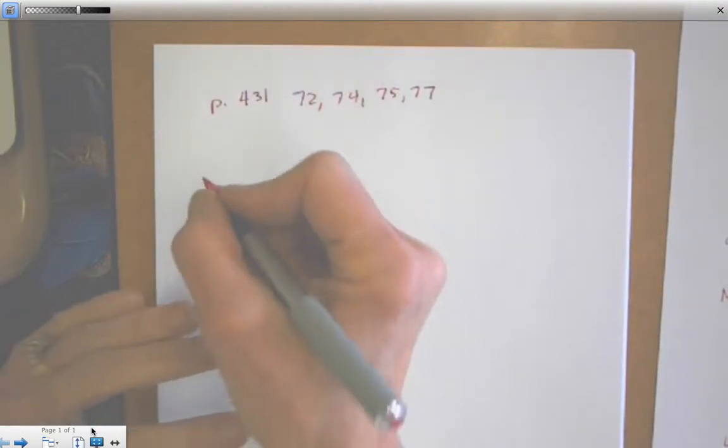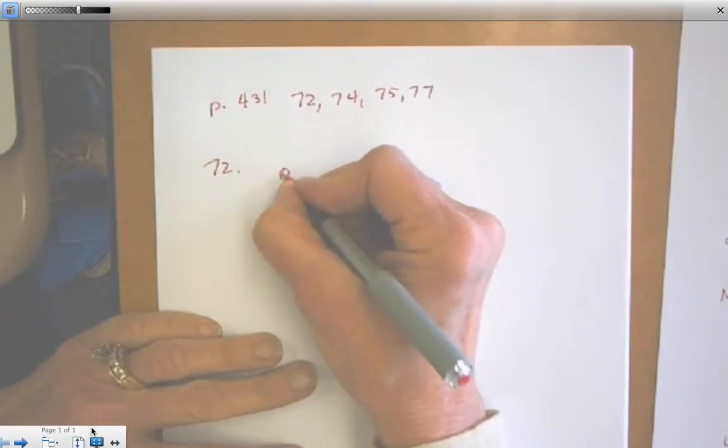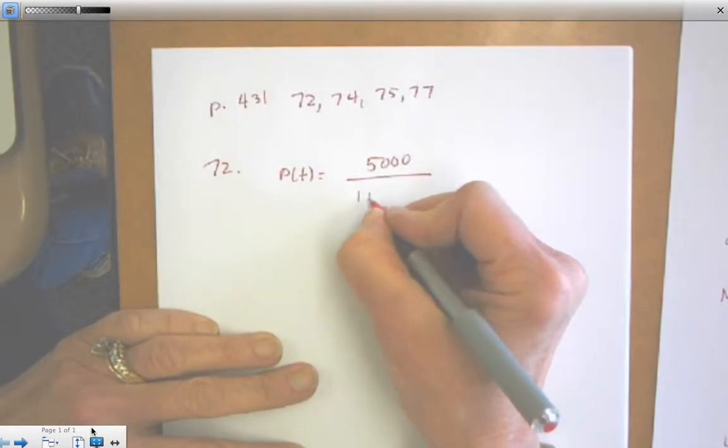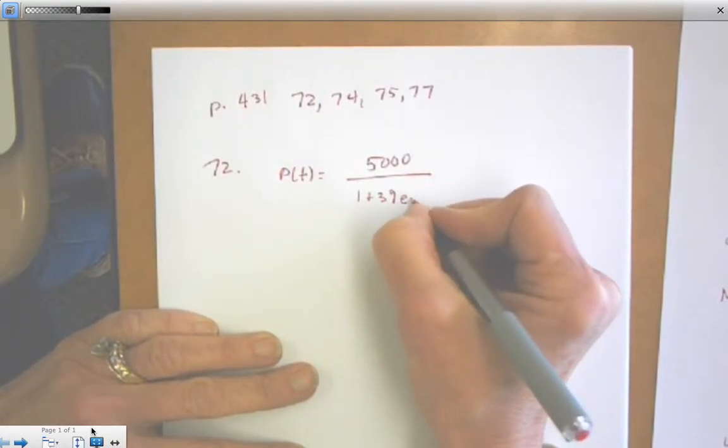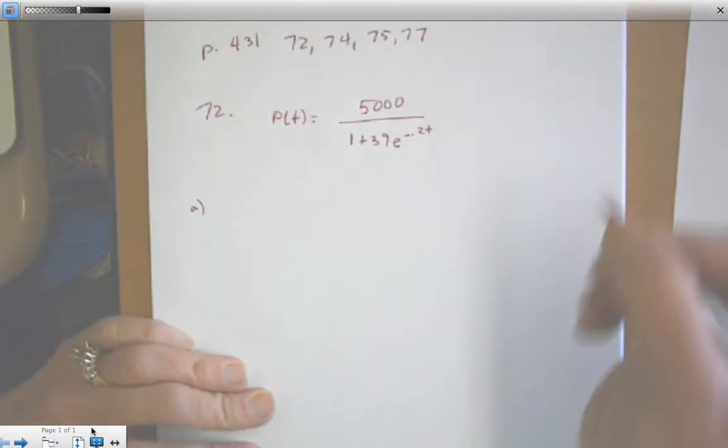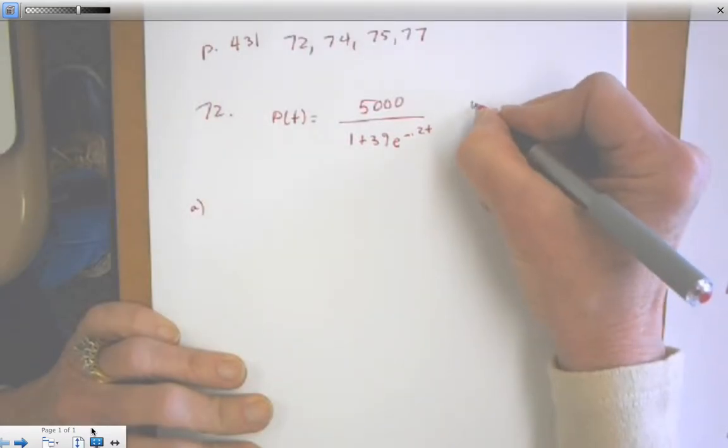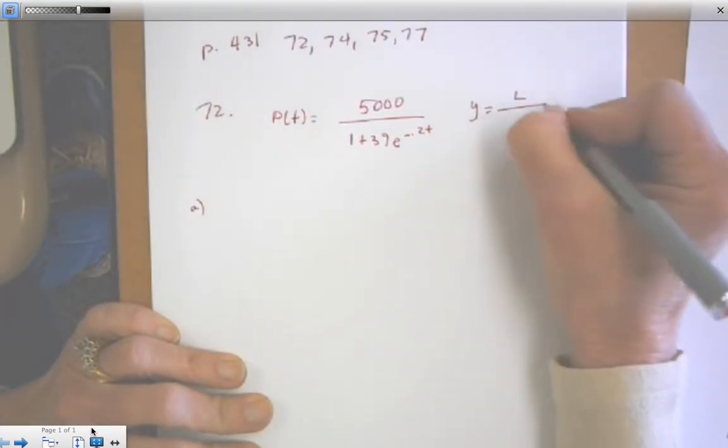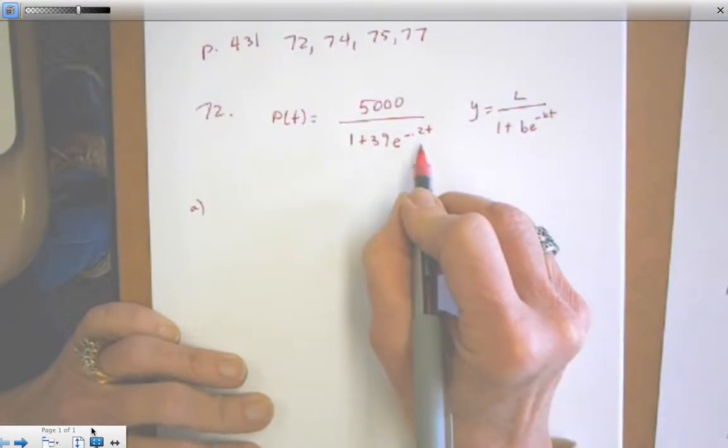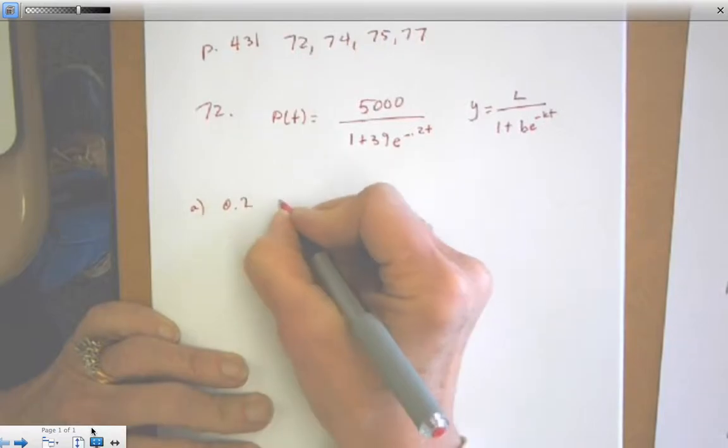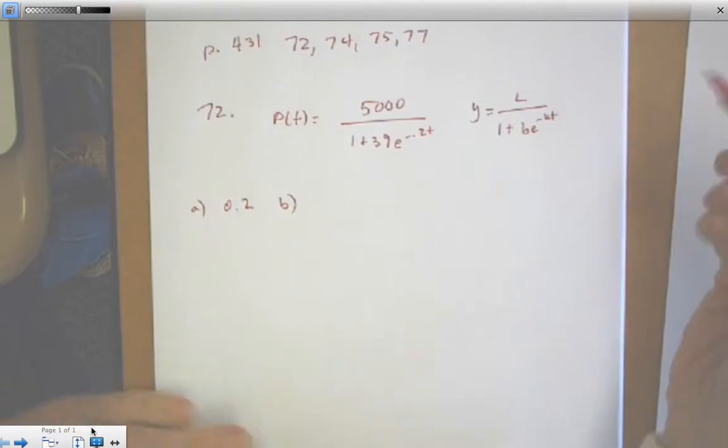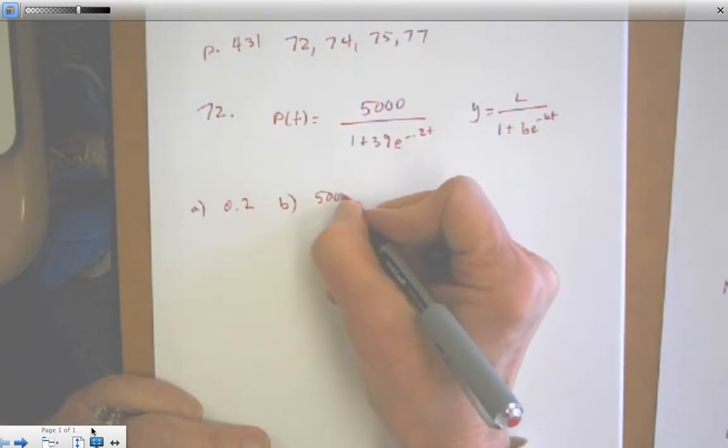Let's start with number 72. So 72 gives you a logistic growth equation already in the correct form. Part A says find the value of K. Well, remember, if it's already in the solution form, we already know that it is Y equals L plus 1 plus BE to the negative KT. So K sits right there, 0.2. Part B asks for the carrying capacity. So the carrying capacity is the numerator, 5,000.